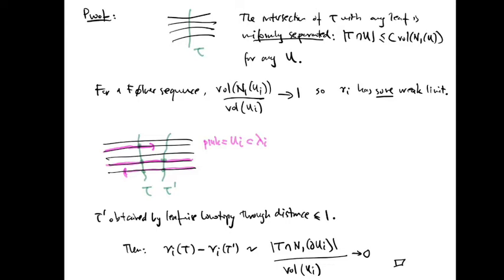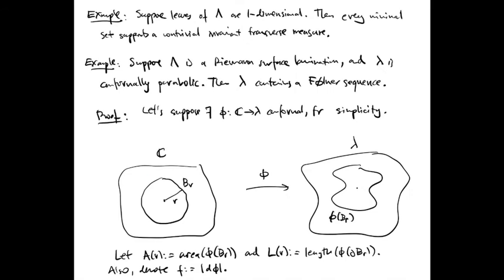Since tau prime is obtained from tau by a leafwise homotopy through paths of distance at most 1, the intersections of tau and of tau prime with U_i all match except possibly for those which are within distance 1 of the boundary. The number of those is comparable to the number of intersections of tau with the one-neighborhood of the boundary. When we divide through by the volume of U_i, the result must go to zero by the definition of a Følner sequence. This shows that nu is an invariant transverse measure.